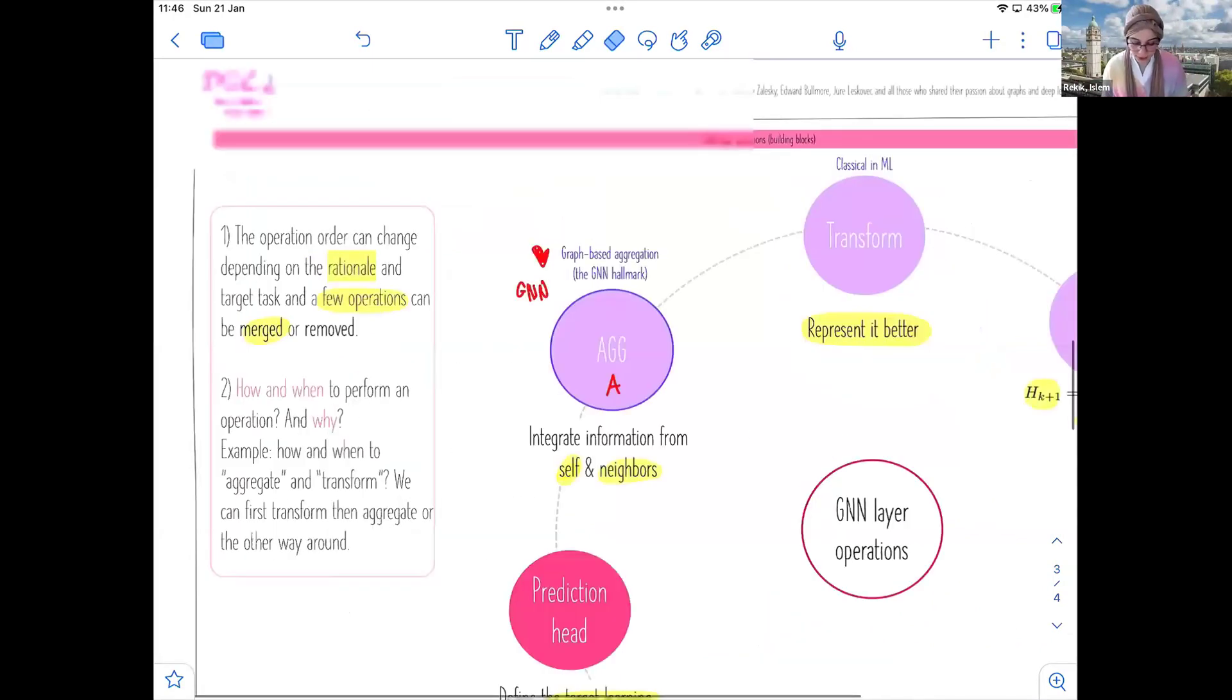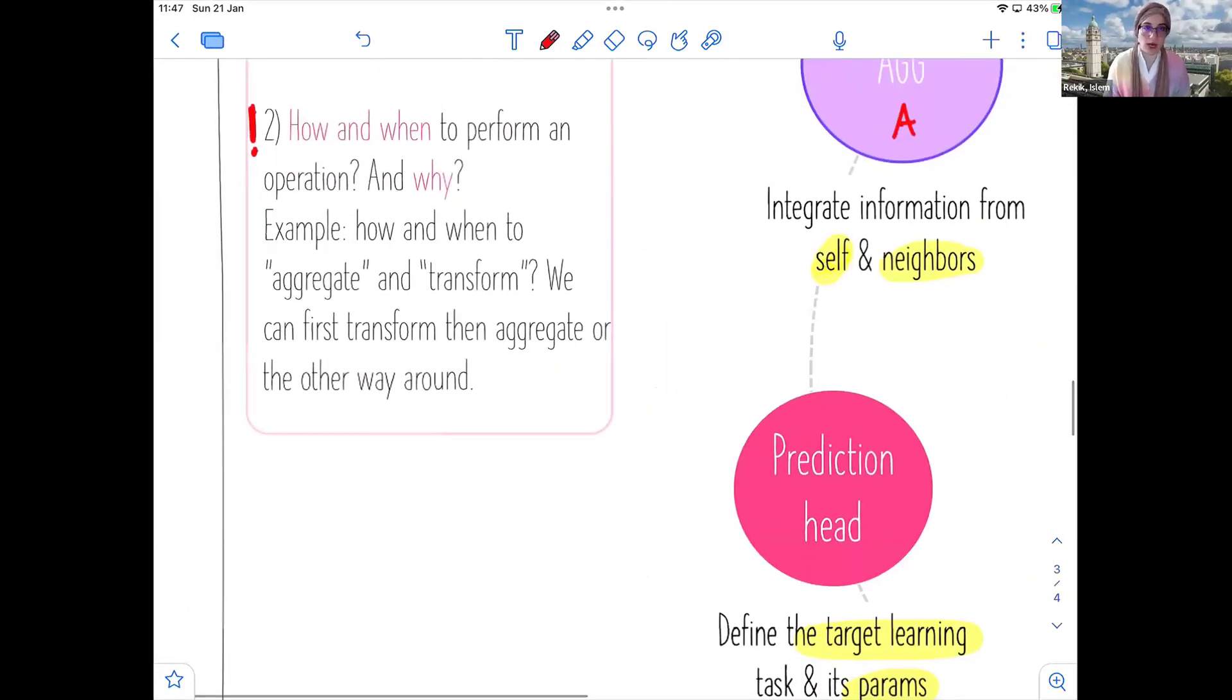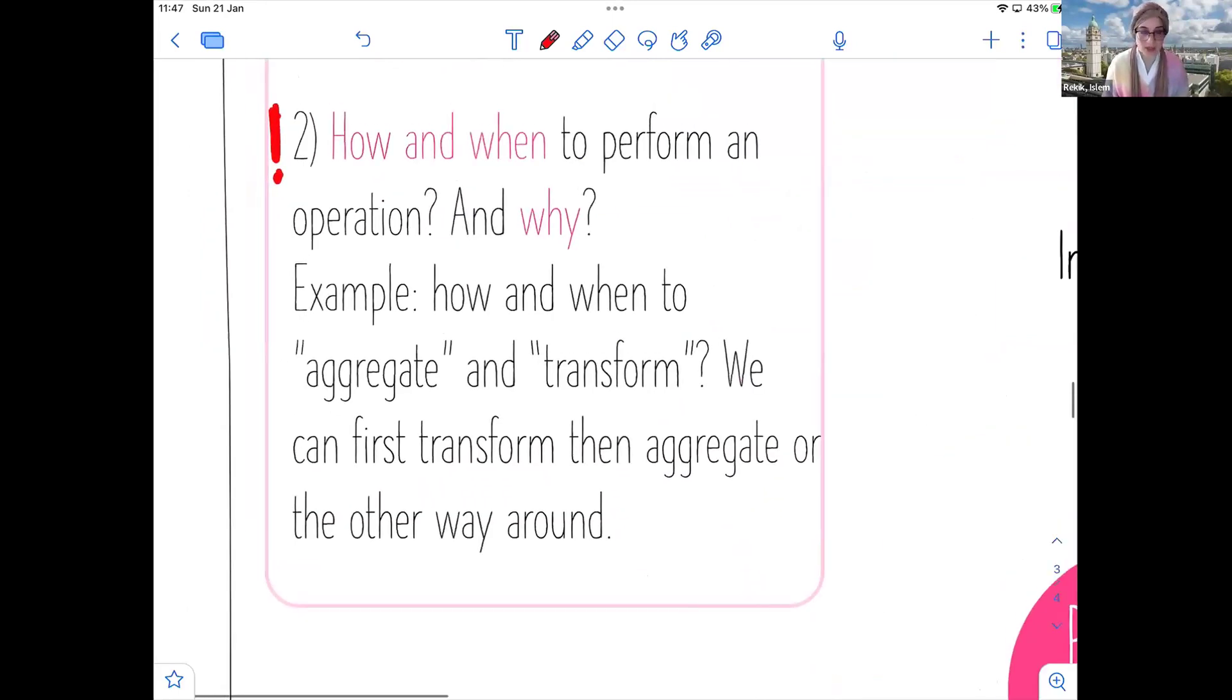Now, these are very important questions. Look, we have multiple operations here. We have aggregation, transformation. We have the propagation rule, have batch normalization, dropout. We have the type of activation function we want to use. And we have to fix and define the type of prediction task that we want to solve. We need to ask for each one of these, we need to ask the second question, which is very important. This is a very important question. How and when to perform an operation? And why? Why would we need batch normalization? Why would we need a dropout? Why would we need to add the prediction head there? Why would we need to do pooling or whatever.